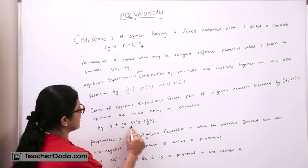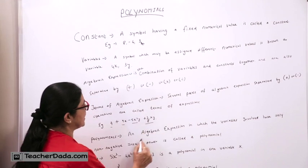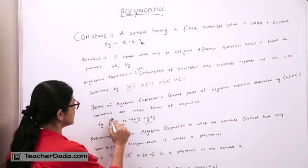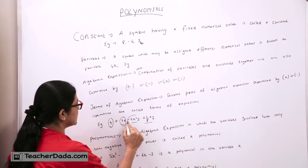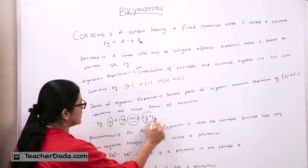For example, 4 plus 9X minus 5X square plus 3 upon 8XY. So this is the first term, this is the second term, this is the third term and this is the fourth term.